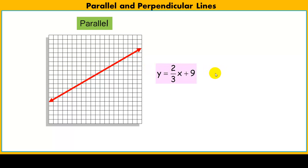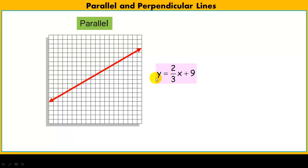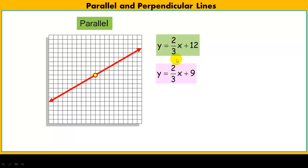Consider the line Y = 2/3x + 9. The slope is 2/3 — it's always the coefficient of x. The +9 is the y-intercept, telling us where the line crosses the y-axis. The slope tells us what the line looks like: it rises 2 and runs 3, independent of coordinates. The y-intercept tells us where it is — it crosses the y-axis at the point (0, 9).